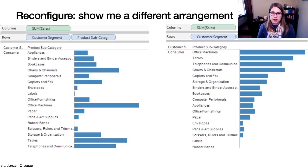Reconfigure, that would be sort of like reordering. So here in Tableau, reordering the list by a particular value. And that could be a way that you would interact with a visualization is to reorder it.